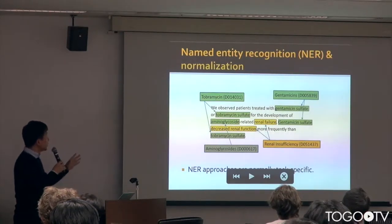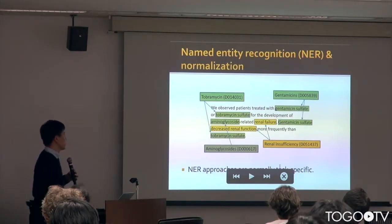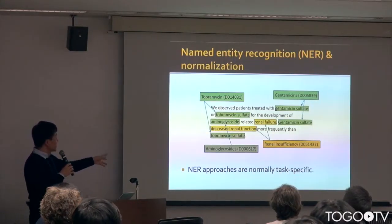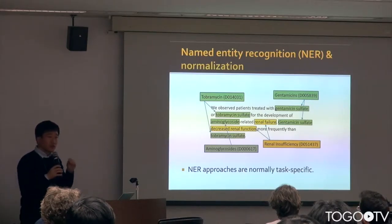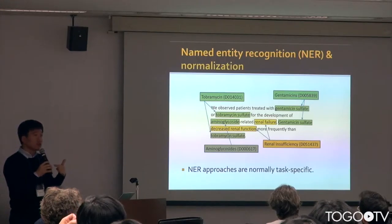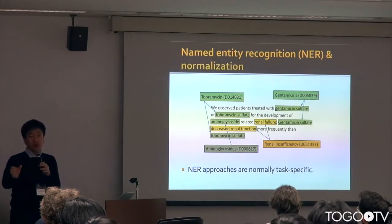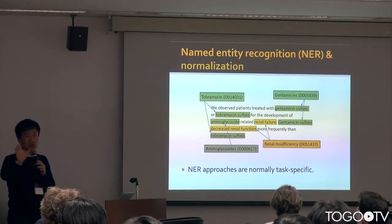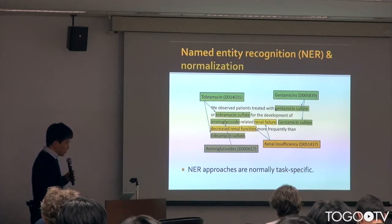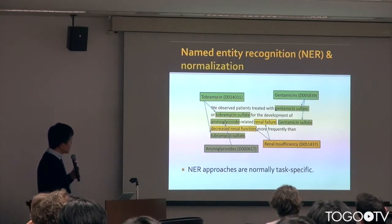Usually named entity linking is very task-specific. If you need protein entity recognition, you need a specific tagger for proteins, or you need other extraction tools for genetics, such as DGGs. So that is one big problem for NEL and normalization.